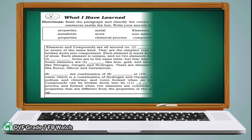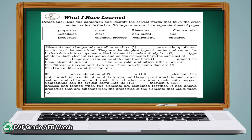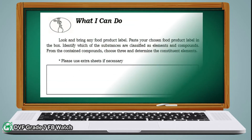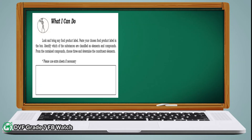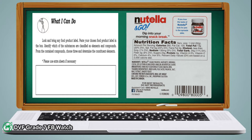Let's proceed to 'What I Have Learned.' In this activity, you are going to complete the paragraph by choosing your answer from the words written in the box. In 'What I Can Do,' look and bring any food product label, then paste your chosen food product label on your paper. Cut out the nutrition facts and the ingredients of the product, then identify which of the substances are classified as elements and compounds. From the contained compounds, choose at least three and determine the constituent elements.